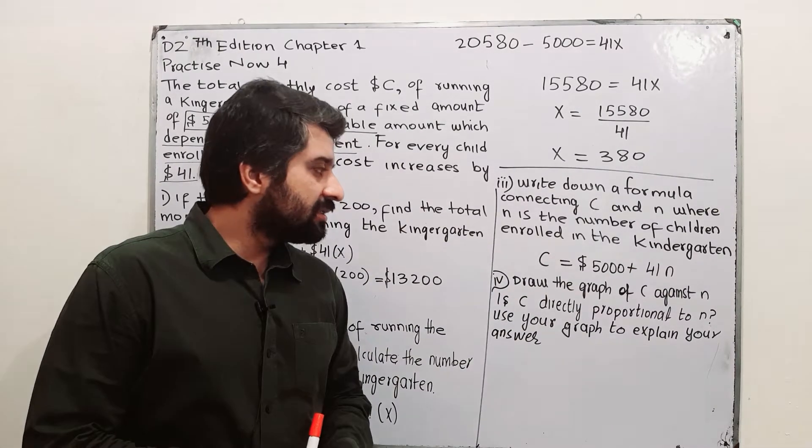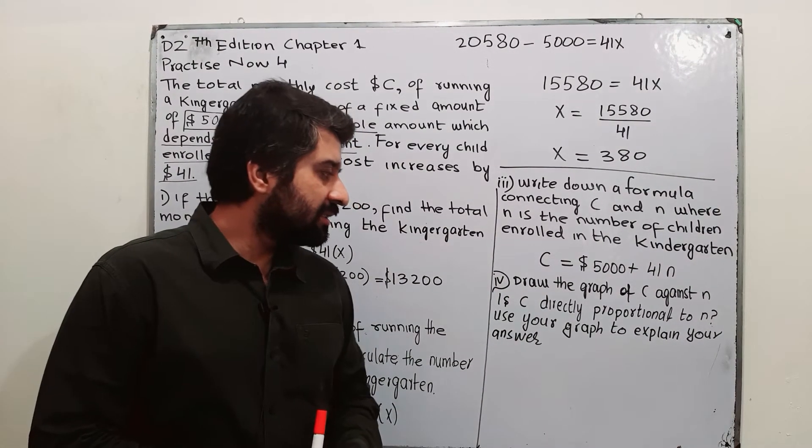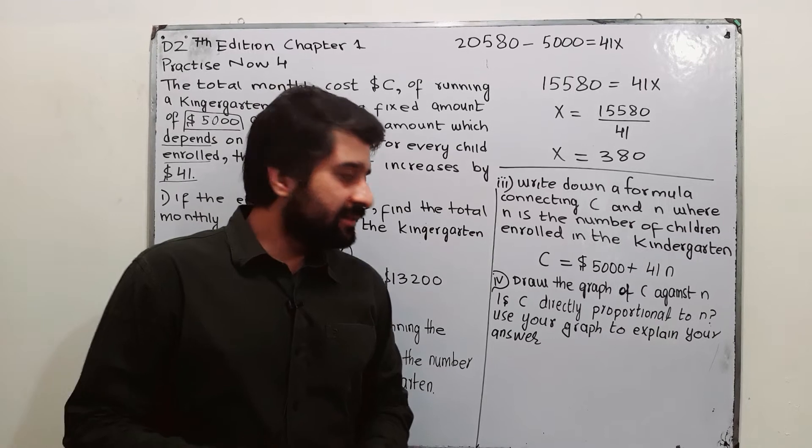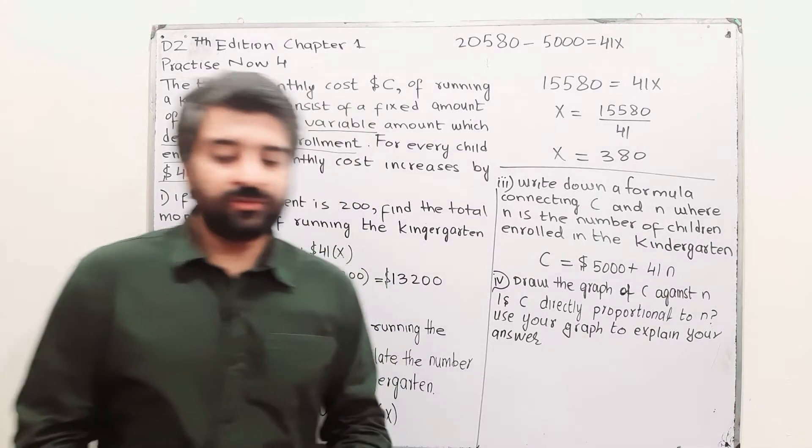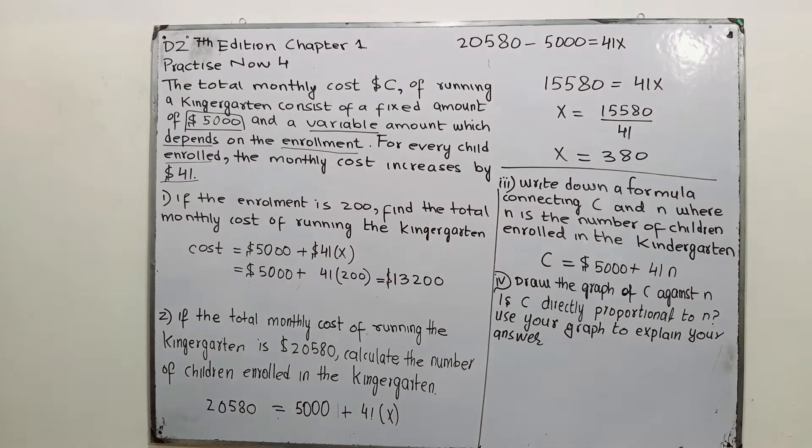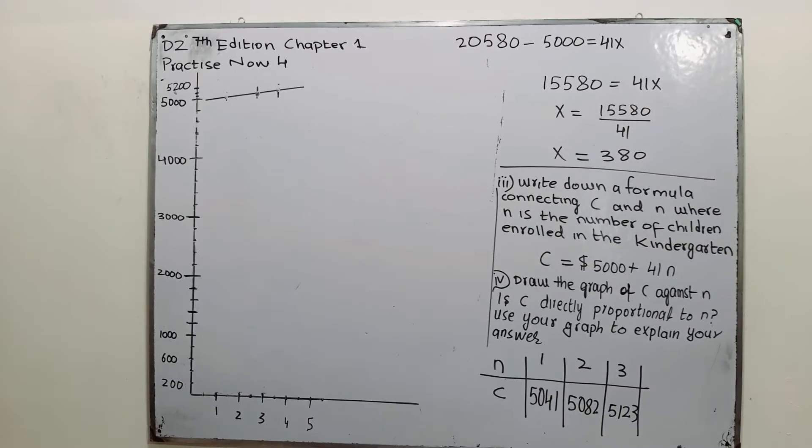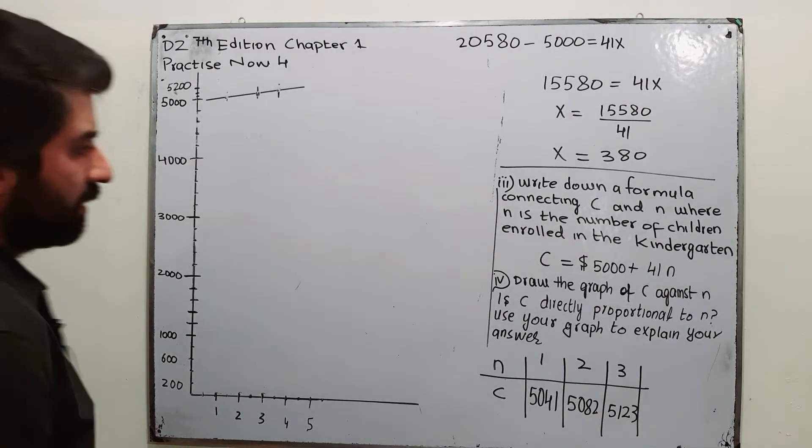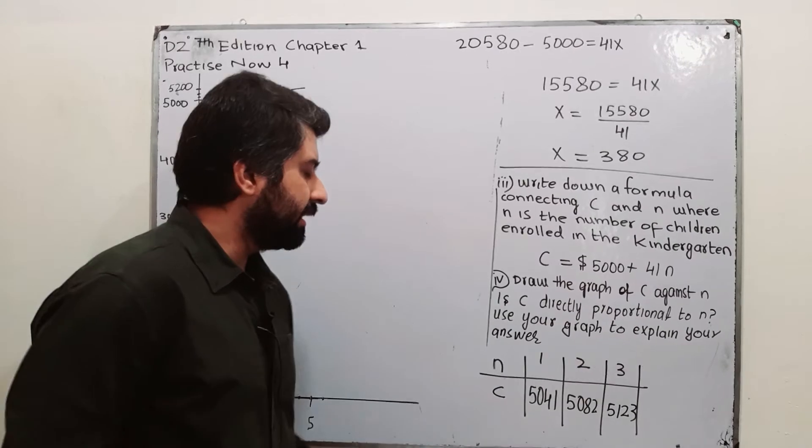And part D is draw the graph of C against N. Is C directly proportional to N? So, let us draw the graph now.